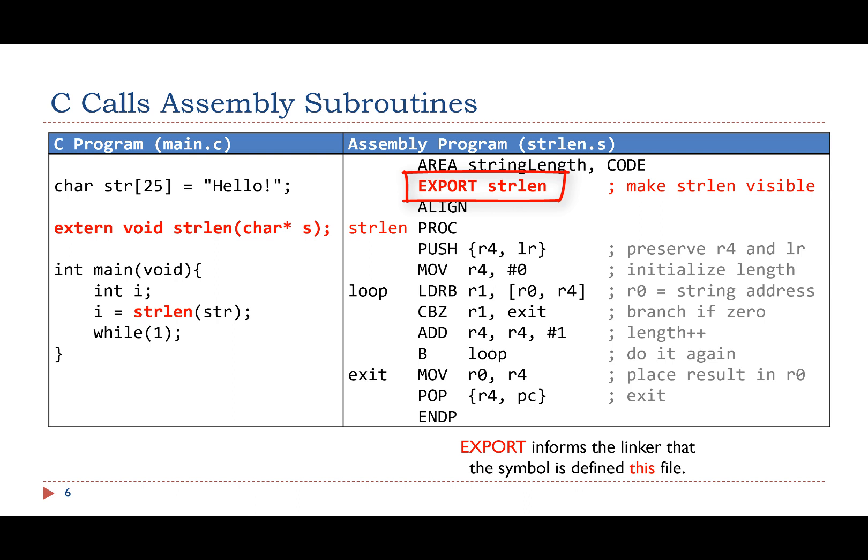The function name is a symbol. The export statement informs the linker that the symbol is defined in the current assembly file. The C program must declare the assembly subroutine by using the keyword extern to inform the compiler that the implementation of this function is in a different file.